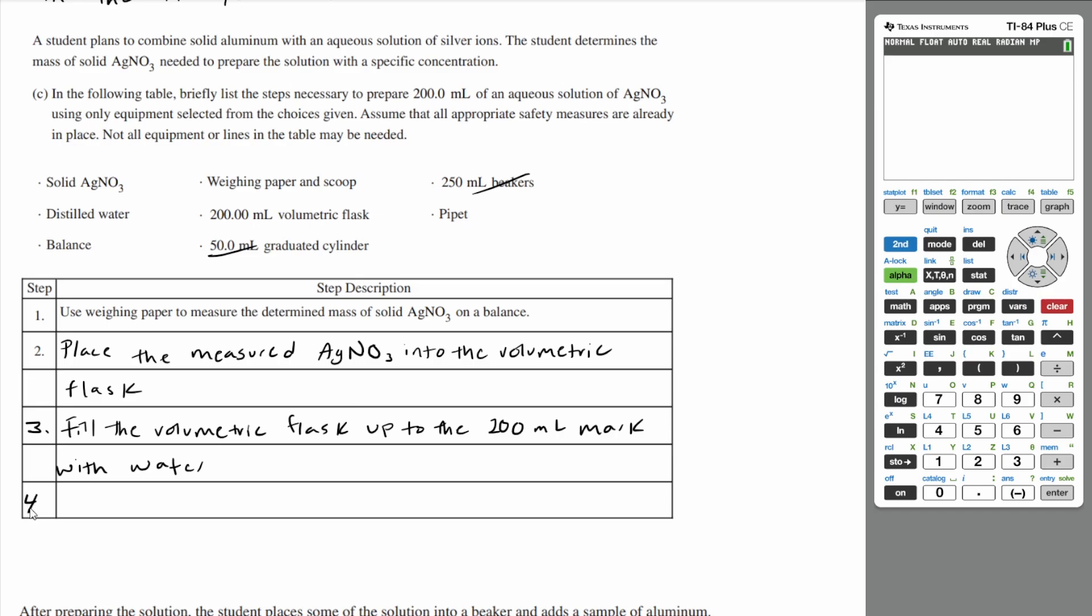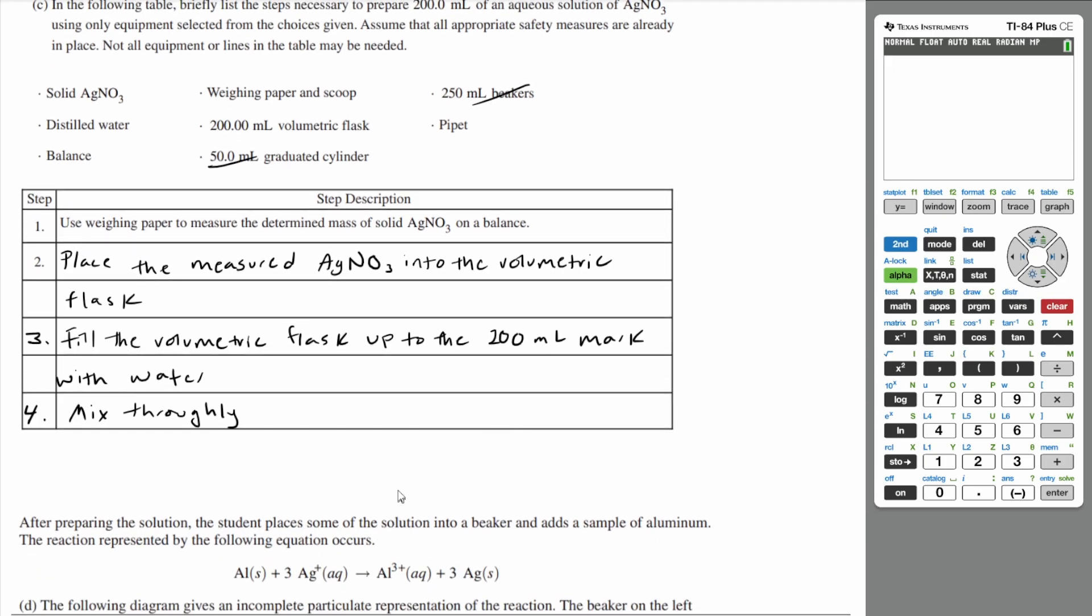So our second step would be to place the silver nitrate into the volumetric flask. And now the third step would be to fill up the volumetric flask up to the 200 milliliter mark. Now there's a reason you do the third step before the second step. If you filled up to the 200 mL mark with water first and then added the silver nitrate, the silver nitrate may make you go over the 200 mL mark. So you want to add the solid before filling it up with water. And so our last step would be just to mix everything.